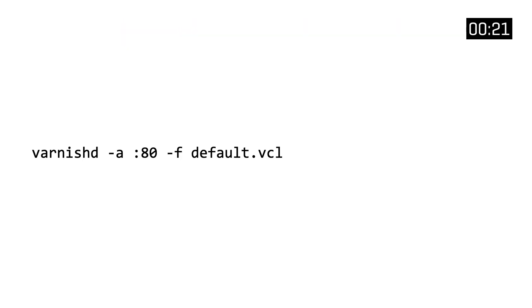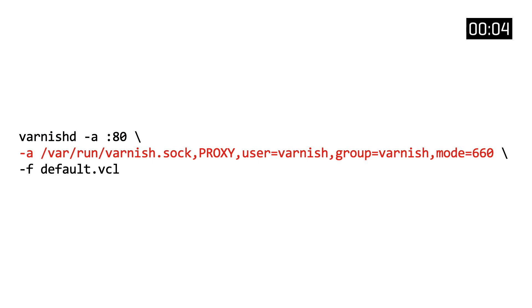To enable proxy protocol support in Varnish, just add an extra listening address on top of the regular HTTP listening address. Specify a port — in this case 8443 — and use the proxy keyword to enable proxy V1 and V2 support on that listening address. For local connections that don't require TCP/IP, UNIX domain sockets are supported: specify the path of the socket, use the proxy keyword, and then specify some file system related parameters.